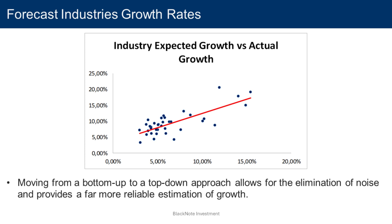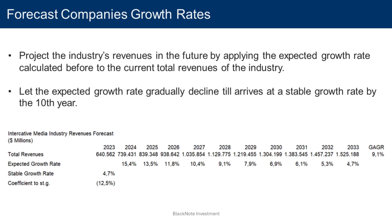Moving from a bottom-up approach to a top-down approach allows for the elimination of noise in the data and provides a far more reliable estimation of growth which can be used in valuing companies. What we have obtained so far is the expected revenues growth rate for an entire industry, but our goal is to forecast the revenues of the specific company we are analyzing. The second chapter therefore will focus on how to calculate how much the revenues of a company will grow given the expected growth rate of the industry it belongs to.